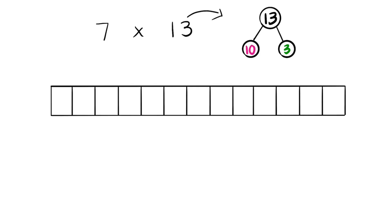The next step is to make a tape diagram. We said 7 times 13. Let's go ahead and fill it in. 7 times 1, 7 times 2, 7 times 3, 7 times 4, times 5, times 6, times 7, times 8, times 9, times 10, times 11, times 12, times 13.